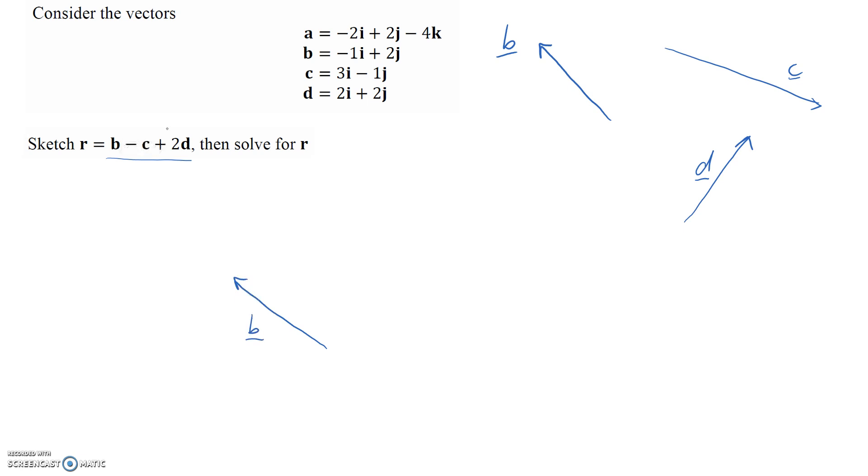Now we want to take away c. This is positive c. If we have negative c, it's just in the opposite direction but same length otherwise. So it's going to go something like this.